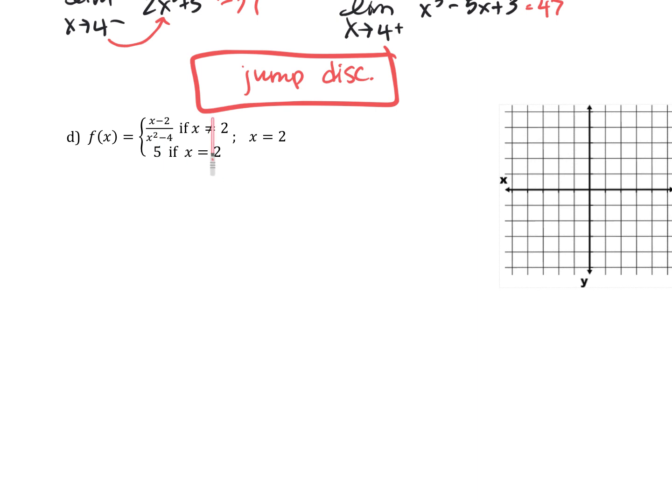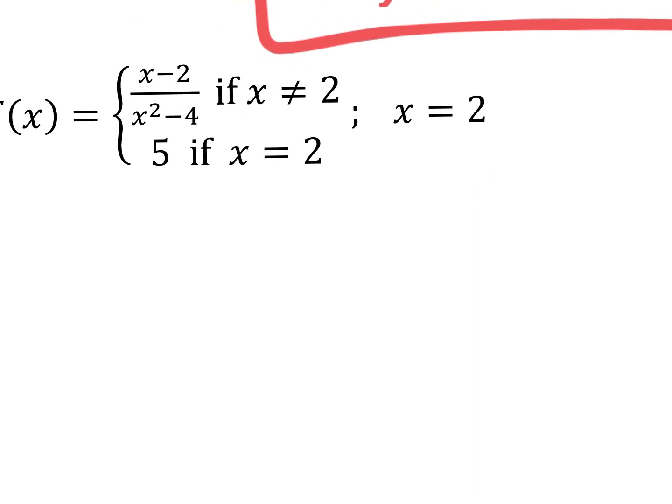This piecewise function has (x minus 2) over (x squared minus 4) when x doesn't equal 2. Graphing it in Desmos, when x doesn't equal 2 we technically have a hole there. The calculator shows a hole at x equals 2. The bottom piece says when x is 2, y is 5 — so there should be a point at (2, 5) based on this graph.